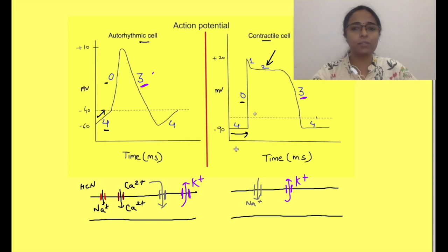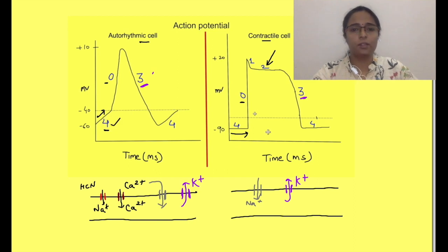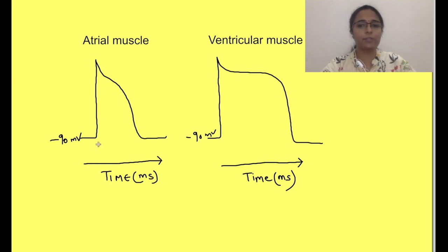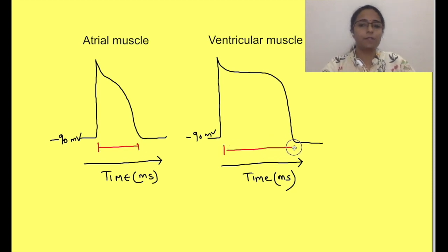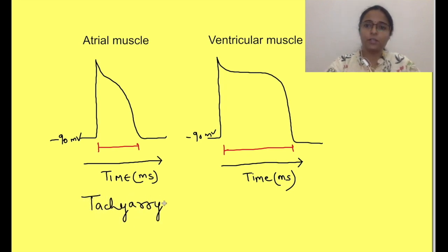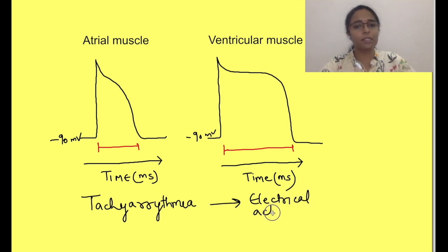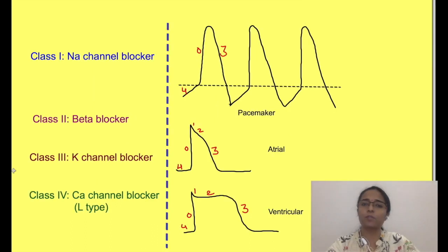For the action of antiarrhythmic drugs we will restrict ourselves to phase 4, phase 0 of depolarization, and phase 3 of repolarization. The duration of action potential of atrial cells is much less compared with that of ventricles. Tachyarrhythmias occur due to abnormality in either generation of action potentials, conduction of impulse, or both. We should know where on these action potentials different classes of antiarrhythmic drugs will act.